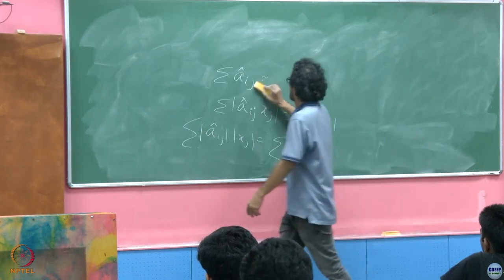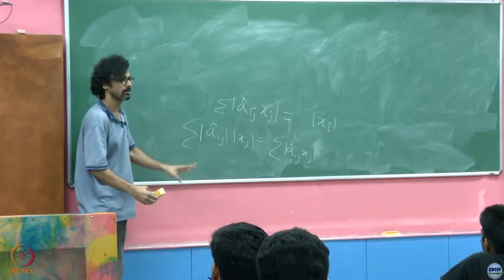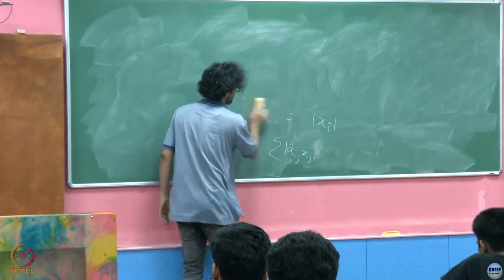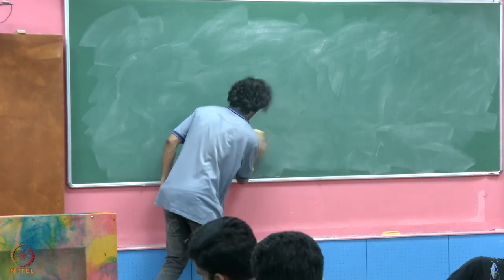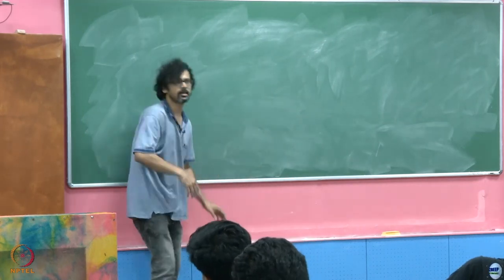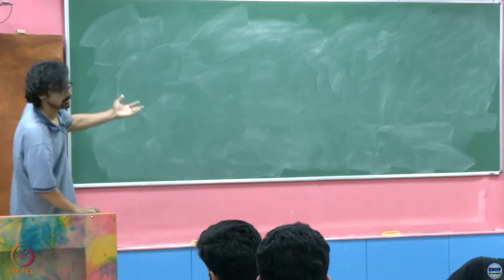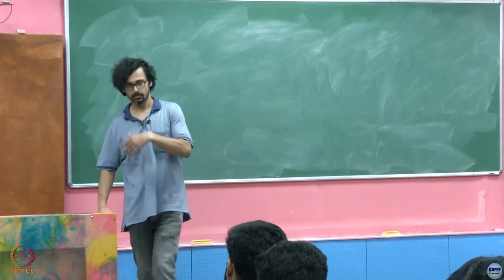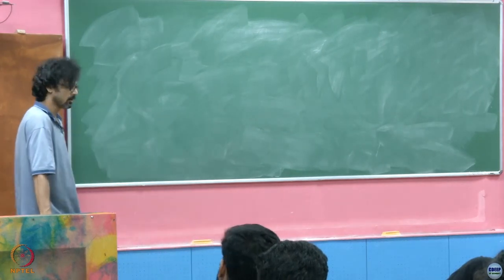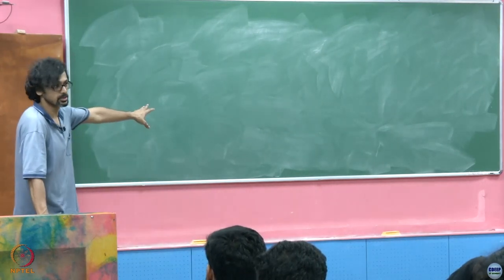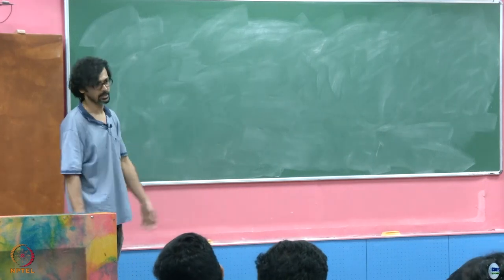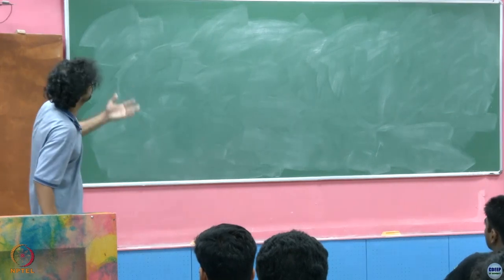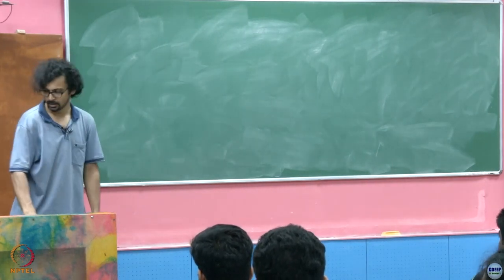I'm going a little quickly because we want to get to the Leontief model. But if you're interested, this is Perron-Frobenius theory — optional material for further study, but quite interesting. What we are covering are some properties of positive matrices. Do read up on non-negative matrices — that's actually the contribution of Frobenius. Oscar Perron first worked with only positive matrices.